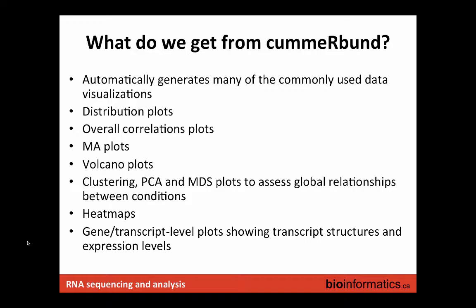CuffMerge runs on all samples across all conditions. It doesn't try to harmonize in a restrictive sense. Let's say you're comparing brain tissue to skin tissue — they're very different and going to have quite different transcriptomes, but will probably share a lot too. When you run CuffLinks on each, the transcriptome gets defined. If there's a unique isoform only expressed in brain tissue and not skin tissue, that's okay — the merged GTF will have a representation of that. It doesn't mind that only one sample or condition has that isoform. Exactly — it's a union, not an intersection.